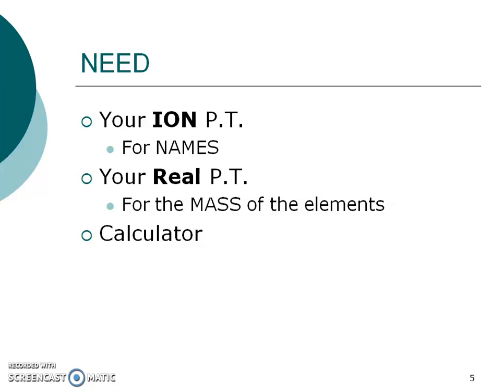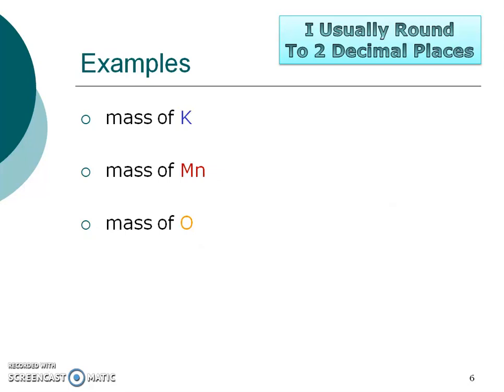Hopefully you paused, got all that information, and now let's look at these examples. Can you find K, Mn, and O? These are three elements — I can tell because each has one capital letter in the formula, so I'm talking about atoms. I usually round to two decimal places. Hopefully you found potassium — K is for potassium — and I got 39.10 grams per mole. That would be rounding that mass on your periodic table to two decimal places. Remember, decimal places means two numbers after the decimal point.